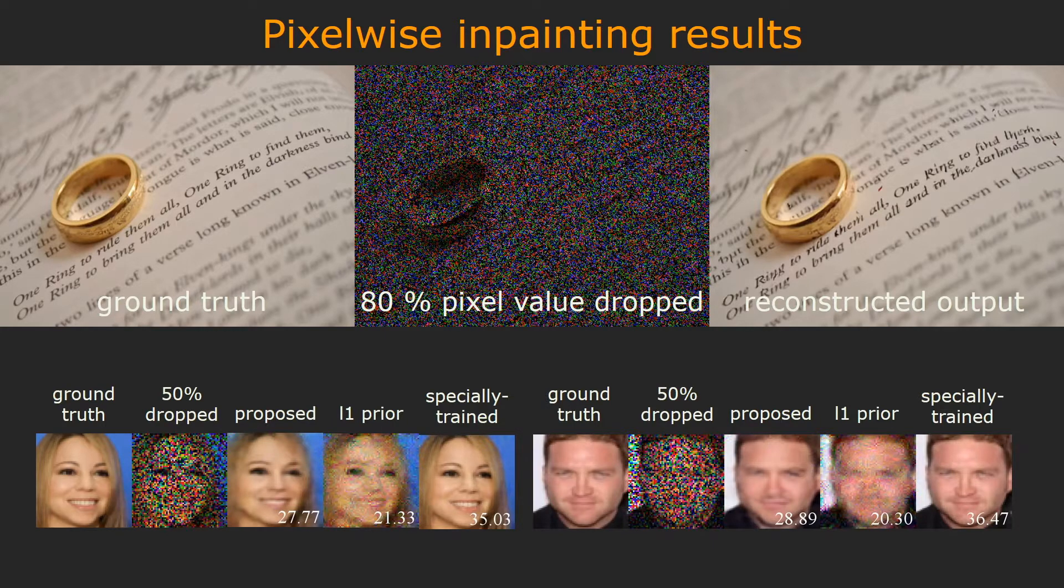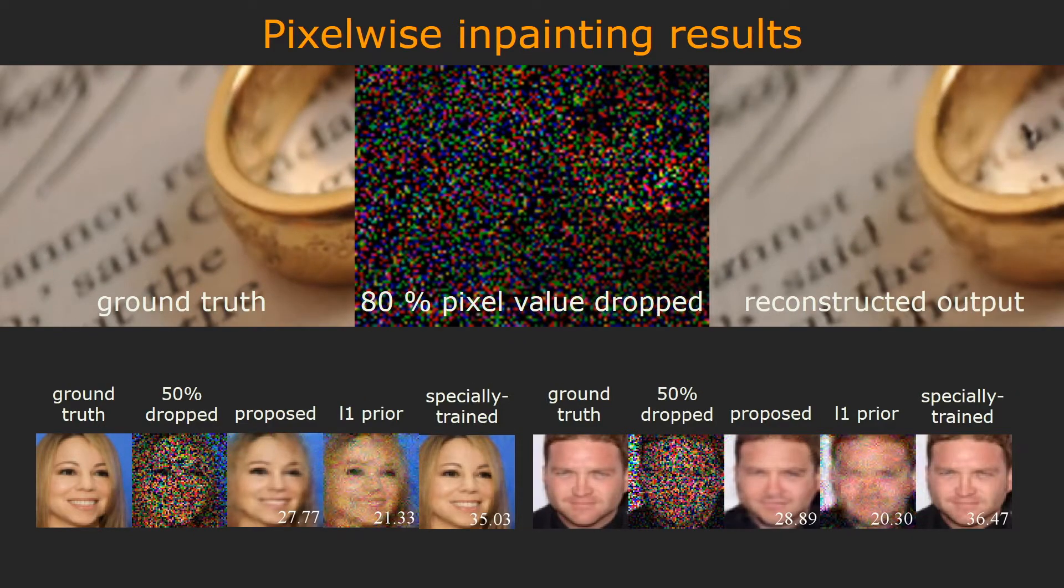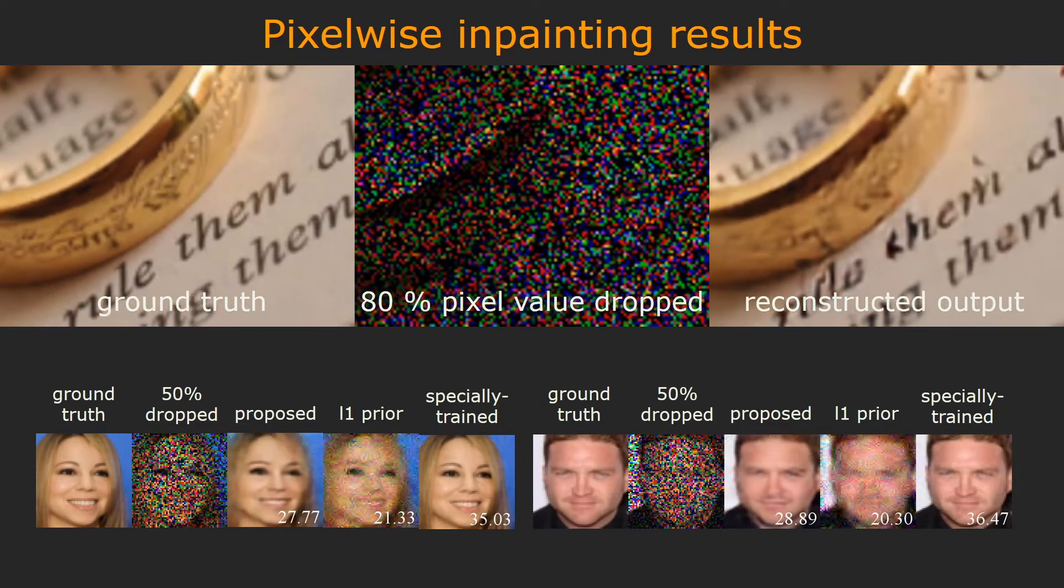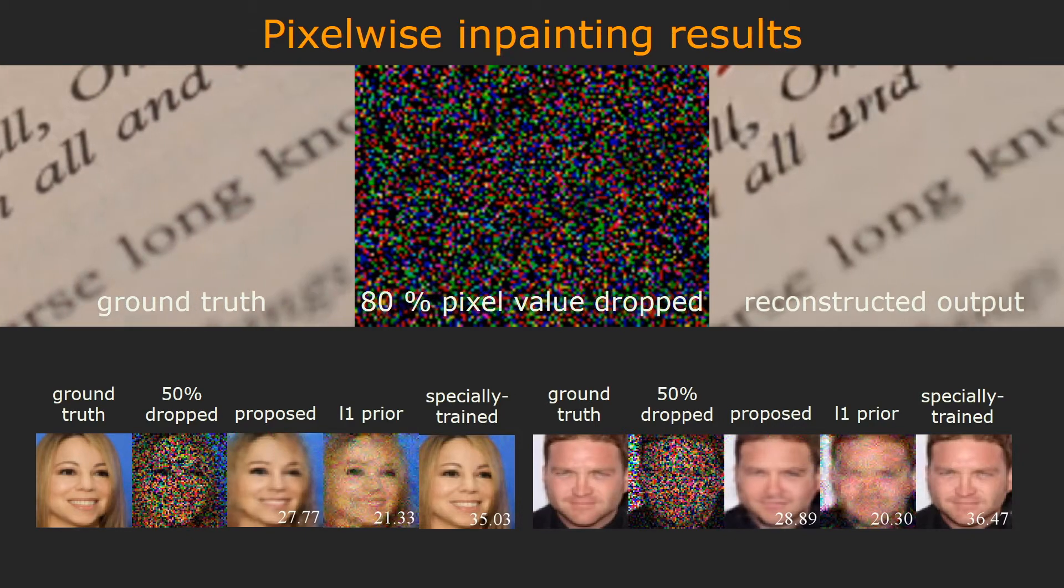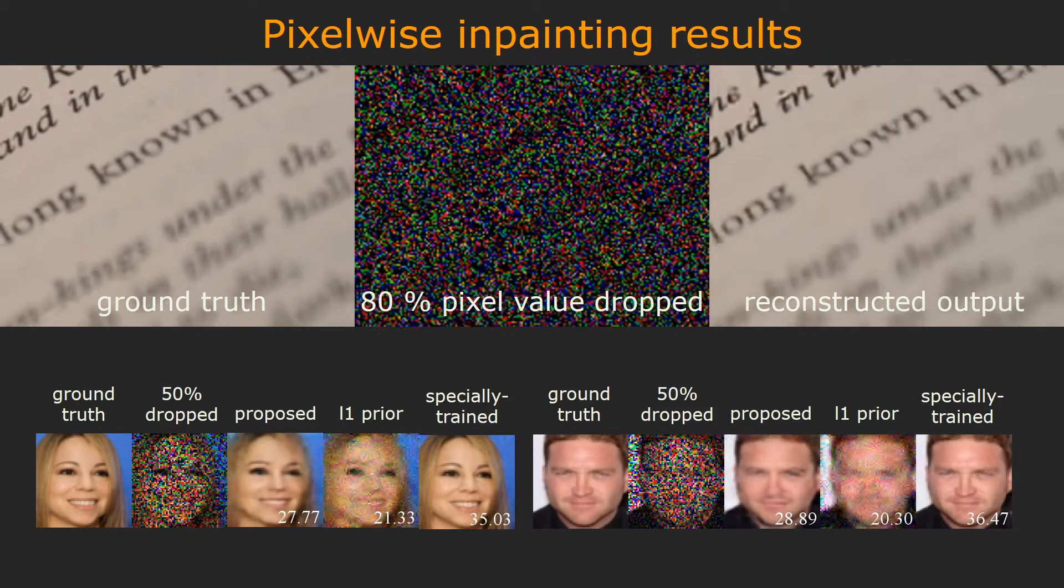We now look at solutions to different inverse problems using the proposed projection network. On the top, we use a projection network trained on the ImageNet dataset, and at the bottom, we use the projection network trained on the Microsoft Celebrity dataset. First, we consider pixel-wise inpainting. On the top, we drop 80% of the pixel values independent to each channel.